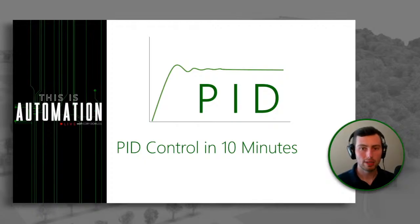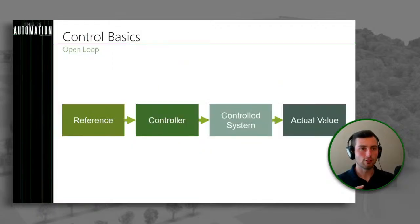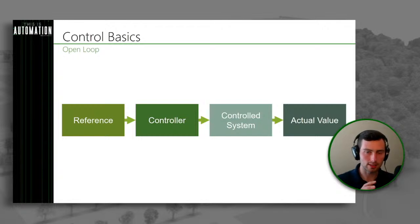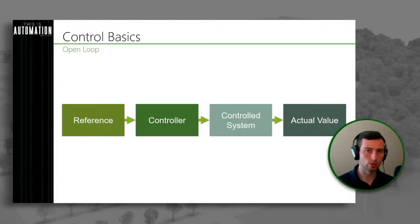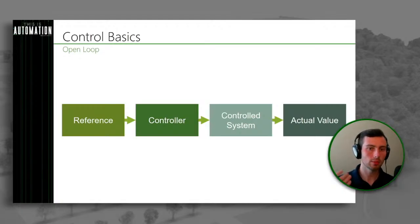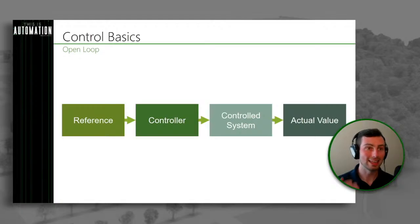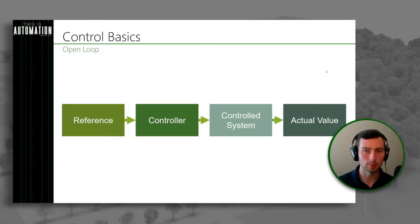Before we get into PID itself, I wanted to quickly talk about some of the basics of control. There are kind of two types: one is open loop, the other one's closed loop. Each of them have similar components with one minor difference. Typically we're looking at some reference value being fed into our controller, and then that controller gives us an output going into our controlled system, and from there we get the actual value. That's what an open loop block diagram looks like.